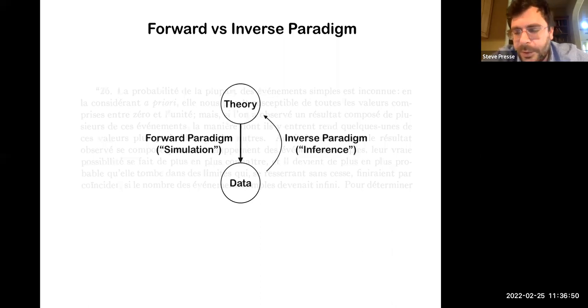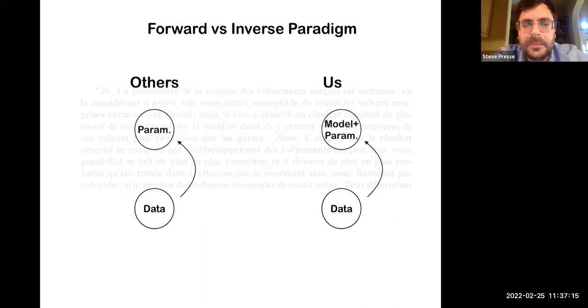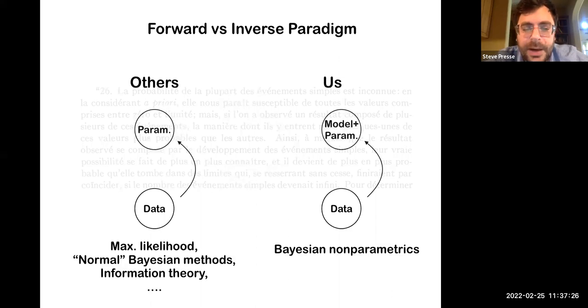But Laplace, and skip forward a couple of sentences, one or two centuries, actually proposed the inverse strategy, that is, you start off with the data and try to infer the cause. Again, this was relevant to astronomy, and frankly, this is what we oftentimes have to do in biophysics today. So the idea is to start off oftentimes with the data and to infer parameters of a model. That's what others do. Here's why what we do is a little bit different, and I'll get into the details of that. For the same amount of data we'd like to be able to infer models as well as their associated parameters.